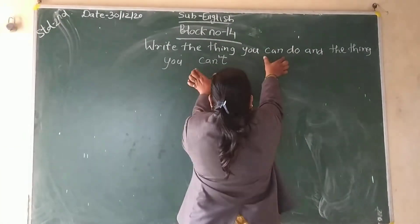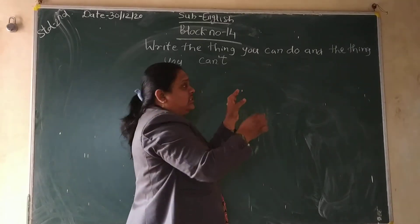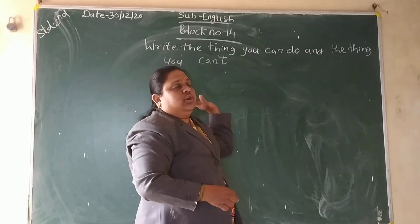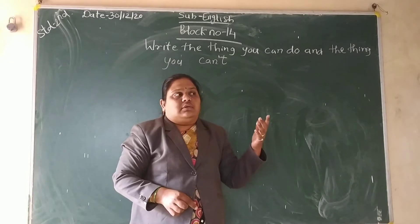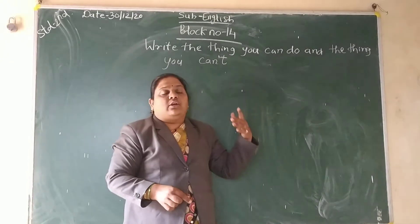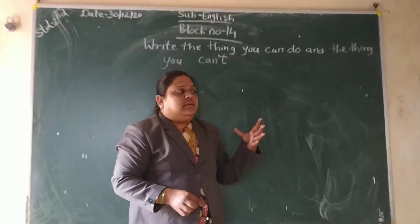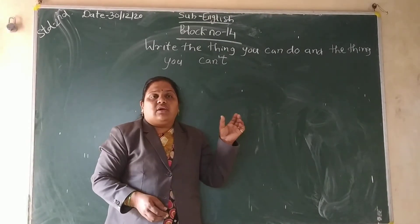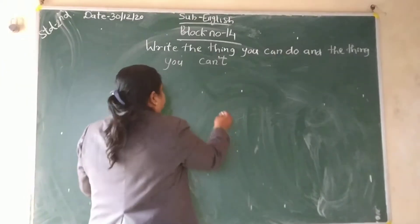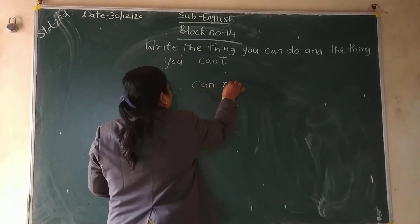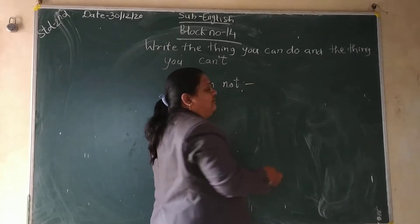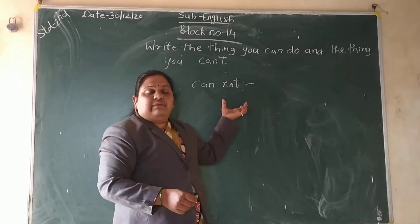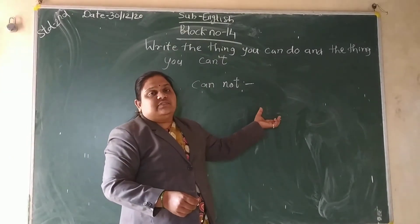Can't is the short form of cannot. When you are saying I cannot play or I cannot do this work, can and not are coming together. So when we are writing, we cannot write this all out. With the help of can't, we can write a sentence very easily.